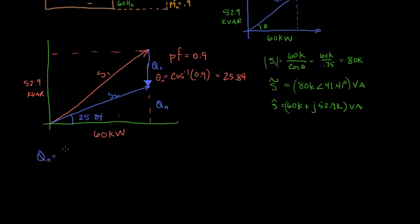And Q nu is going to be a situation where we actually did need to calculate this angle. Because we're going to use the tangent of 25.84, which is not 0.9. We have the adjacent side, so that's going to be 60,000 times the tangent of 25.84.